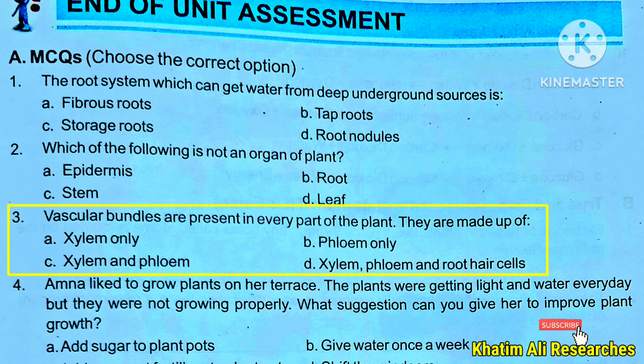The correct option is C. Vascular bundles are present in two types of tissues: Xylem tissue and Phloem tissue. So C is the correct option.